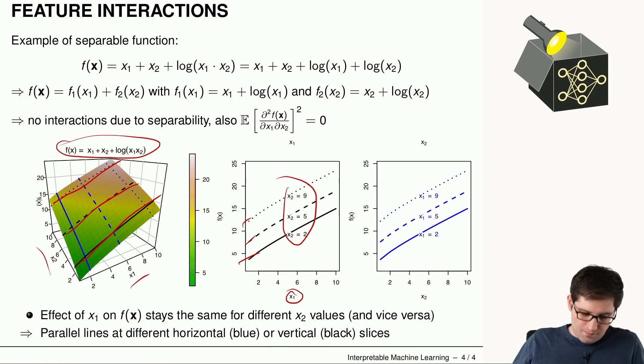And basically, that's the contrary as we have seen before. The parallel lines suggest that we don't have any interaction because changing values of x1 here will not change the slope or the effect of the other feature and the other way around.